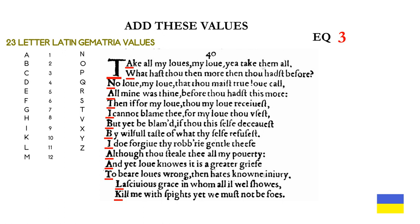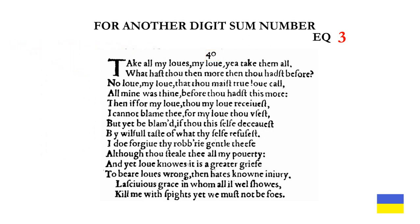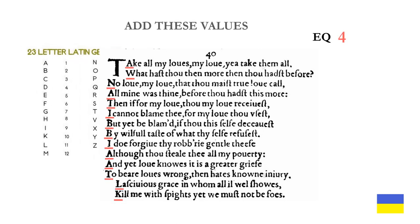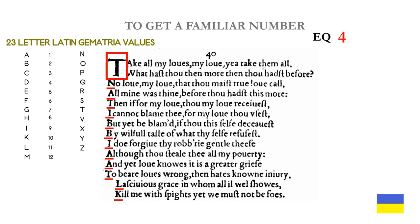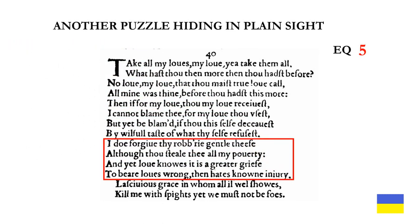For equation 3, we add all of the uppercase letter values. Equation 4: add the smaller uppercase letter values again. The value of the decorative T. Here is another puzzle hiding in plain sight — it's equation 5, and it's the second-to-last sentence in the sonnet.